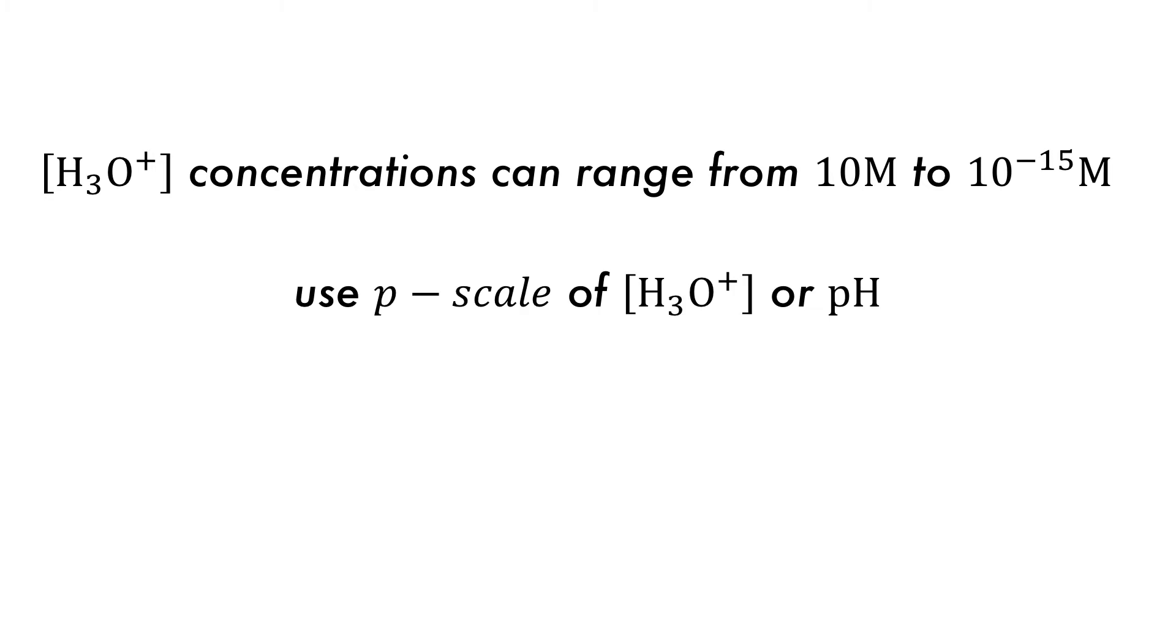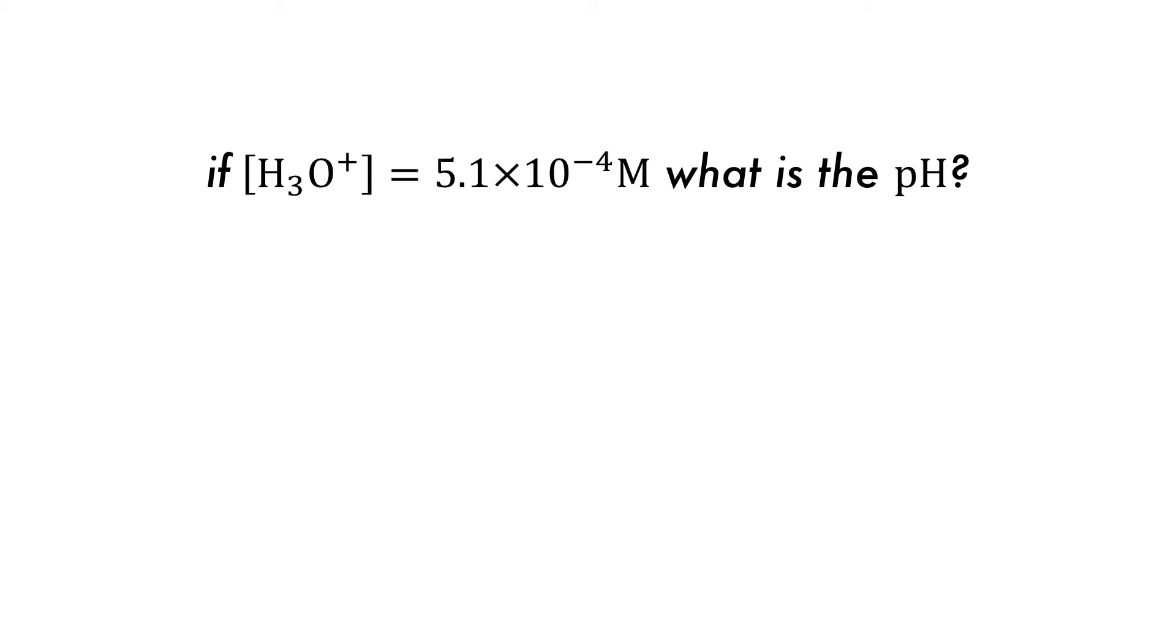We call this pH, which is the p-scale of the hydronium or H-plus concentration. So pH is equal to the negative log to the base 10 of hydronium concentration. How is pH calculated using this formula? Simply plug in the concentration of hydronium into the equation, which will give you the pH as 3.29.